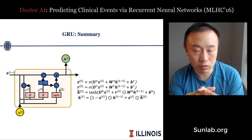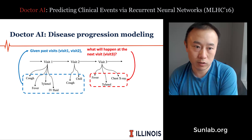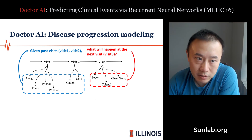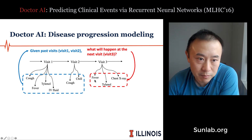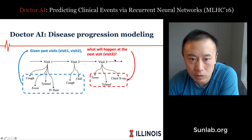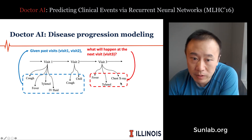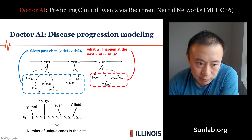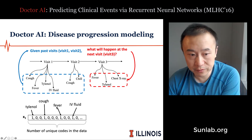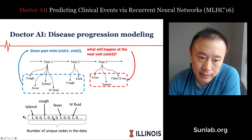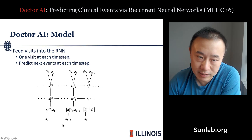GRU is a variant of RNN, and most people today use GRU or LSTM. Doctor AI uses GRU. The task is disease progression modeling: predicting the next visit based on past history — for example, given visit one and visit two, what will happen in visit three? The model predicts diagnoses and the duration between visits. The input for each visit is a multi-hot vector where each event maps to a dimension; if an event like fever occurred, that dimension is one, otherwise zero — a very sparse, high-dimensional vector.